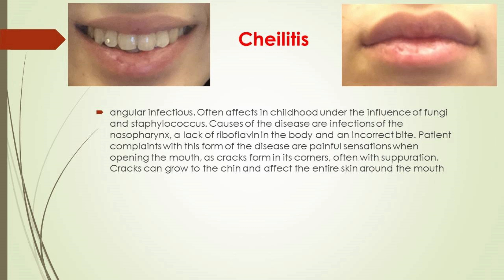Apostematous cheilitis affects only the lower lip, expressed by swelling, inflammation of the salivary glands, hyperemia, and poorly discharged secretion from the salivary glands. Riboflavinosis cheilitis affects patients with insufficient riboflavin (vitamin B2), determinable by pale mucosa and a bright red border of the lips. The shell is covered with scales and peels off, characterized by defeat of the corners of the mouth by erosions with yellowish crusts. The patient feels pain when closing the jaws and burning in the mouth.